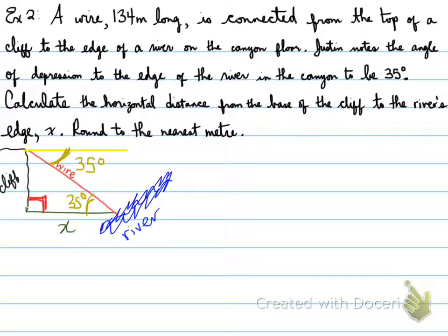Now note, one of these 35 is actually in the triangle that we need. Yes, the cliff makes a 90 degree angle with the canyon floor. We're not going to assume anything otherwise. And now look, we have a right triangle. That's right, folks. Because we have a right triangle, we can solve for x, knowing the fact that the wire is 134 meters long.